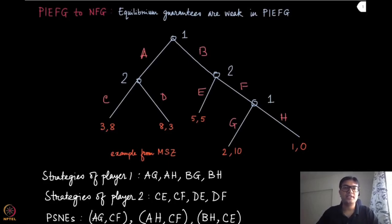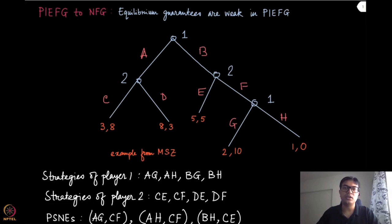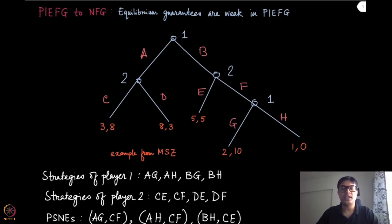We have seen an example of a PIEFG — the perfect information extensive form game — transform into a normal form game, and we have also seen how you can find the usual concepts of equilibrium like the pure strategy Nash equilibrium in that transformed NFG. We have also concluded that there are certain outcomes in that PSNE which are not really credible threats. So let us look at one more example, which will be the running example for this module.